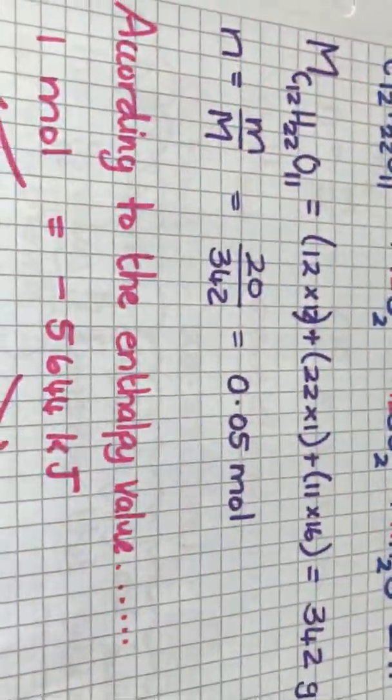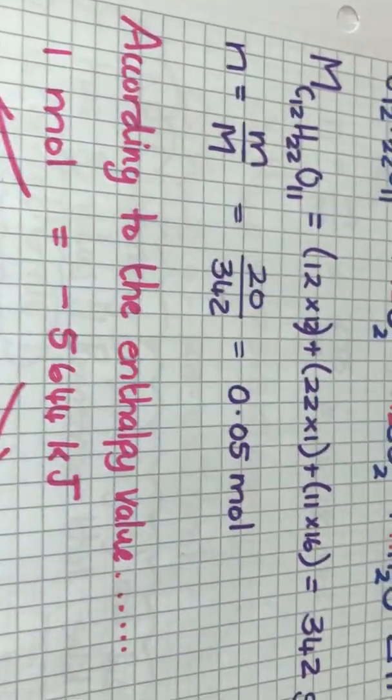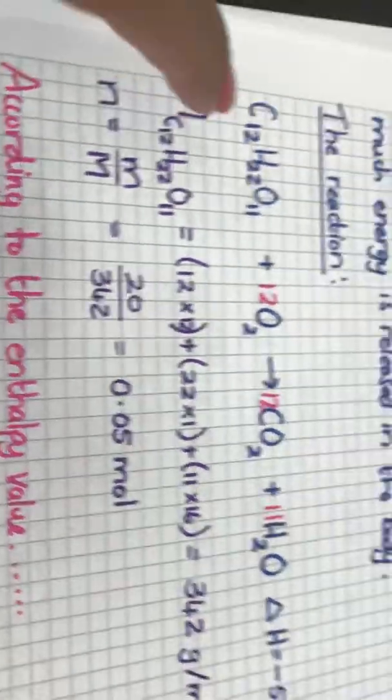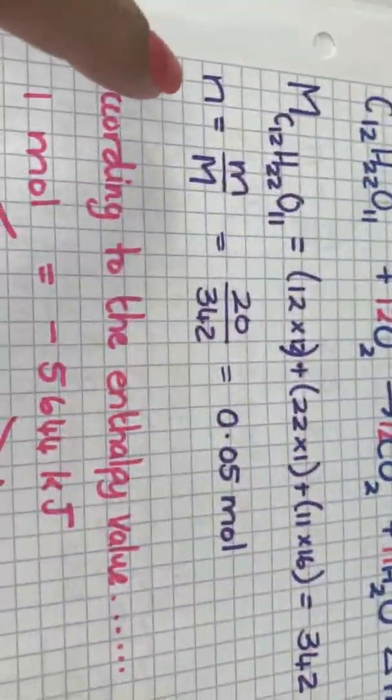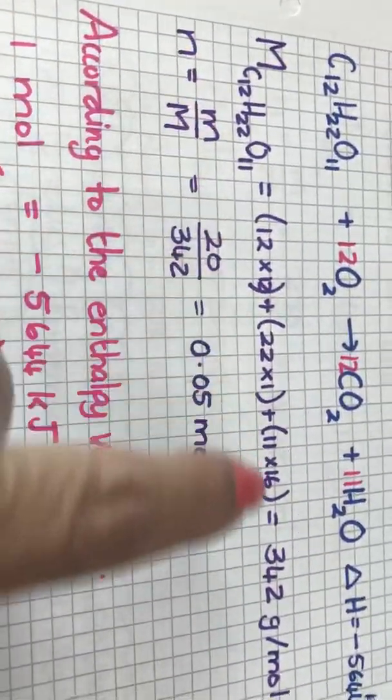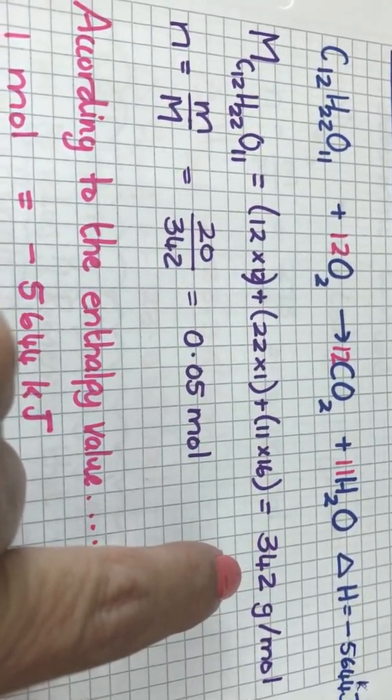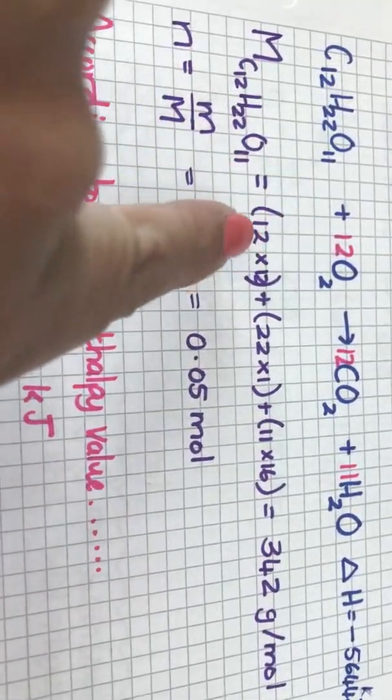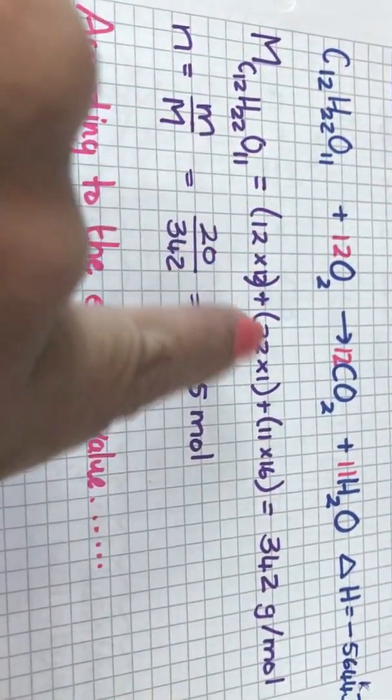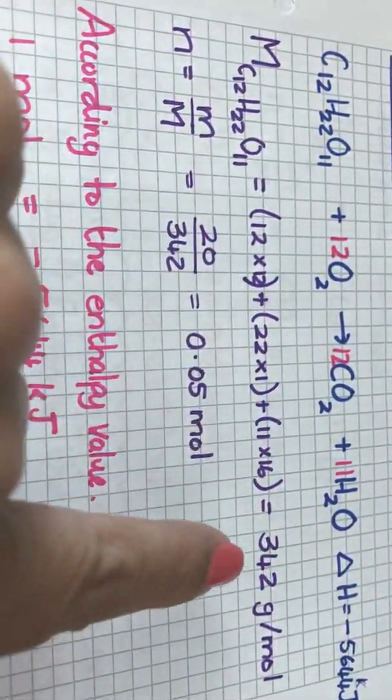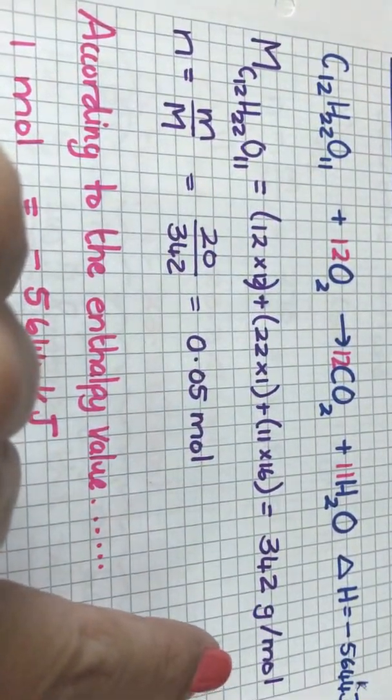So in other words for this I will again go do exactly the same as for phase changes. I will take my mass of sucrose, I will work out what is my relative atomic mass for sucrose. That is 12 carbons times 12, 22 hydrogens times 1, 11 oxygens times 16 gives me 342 grams per mole.